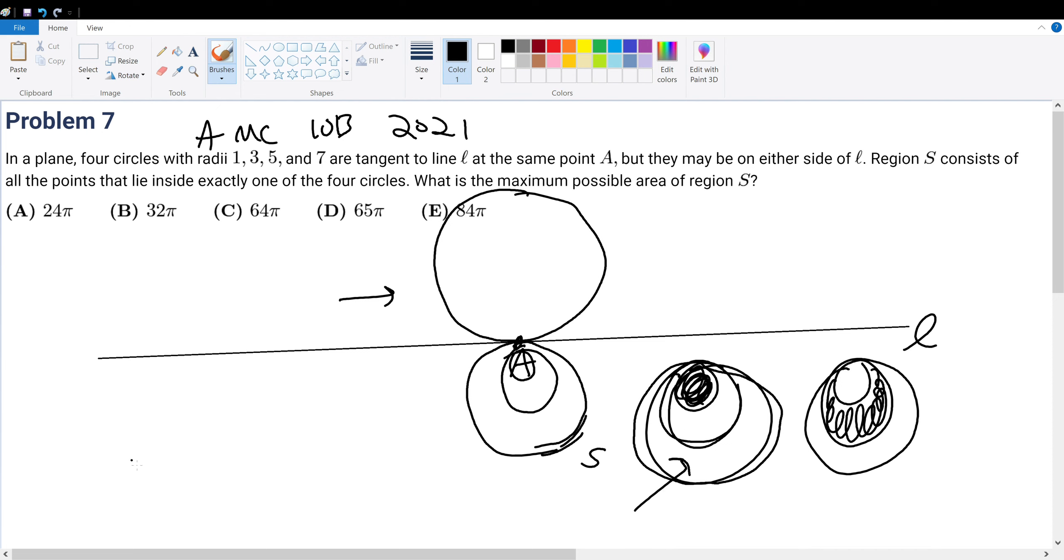So from that understanding, we can say that the final area should be 49π on the top, and for the bottom, it should be the 25π minus the largest circle that's inside it, which is 9π. So this gives 16π, so plus 16π, gives 65π, bringing us the answer choice D.